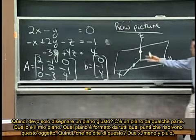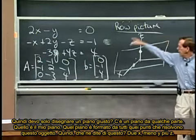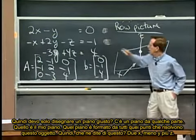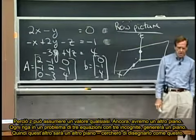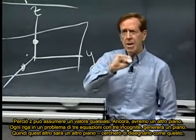That plane is all the points that solve this guy. Then what about this one? 2x minus y plus zero z. So z actually can be anything. Again, it's going to be another plane.